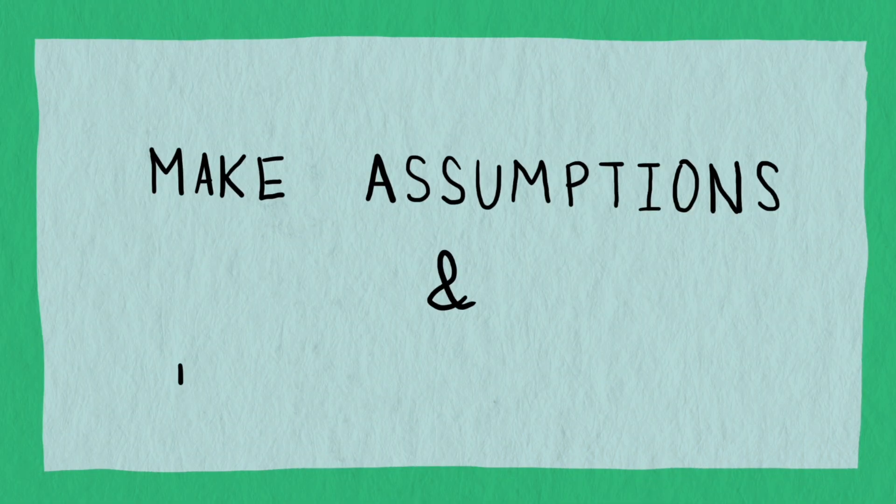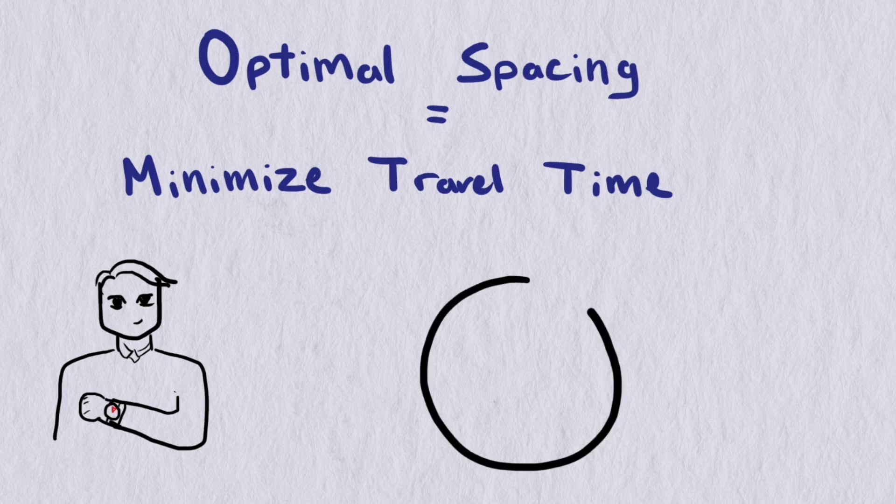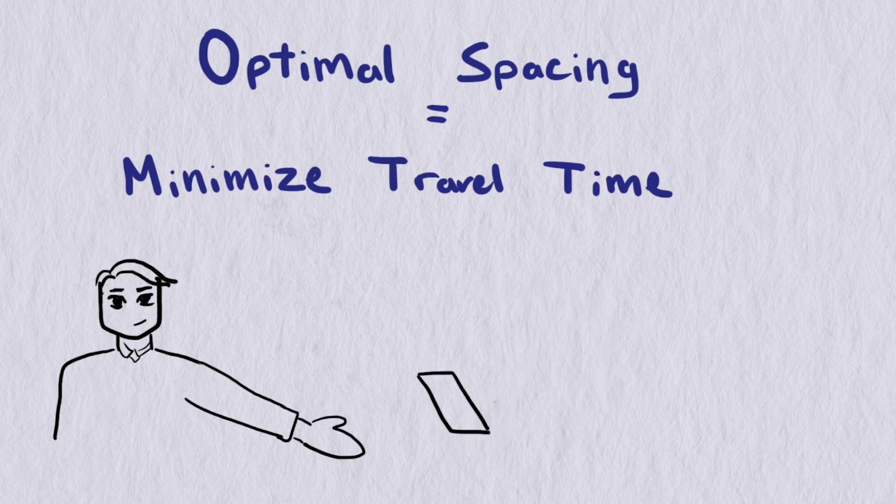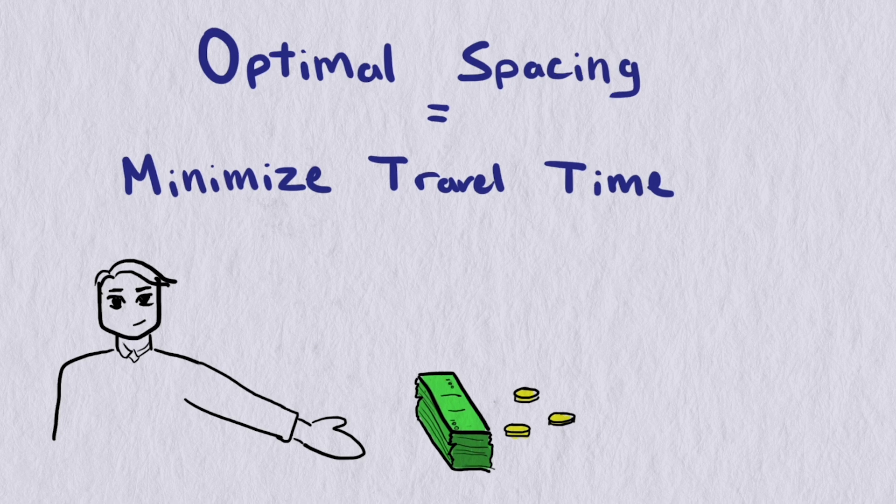The second step is to make assumptions and define variables. The first thing we need to define is what we mean by optimal spacing. I think a reasonable way to define optimal spacing is the spacing that minimizes the travel time for passengers. There are other considerations, cost for example. The engineers don't have unlimited funds so there are some constraints. Let's start with our definition of optimal: the spacing that minimizes the travel time. And let's make some other assumptions about the situation.